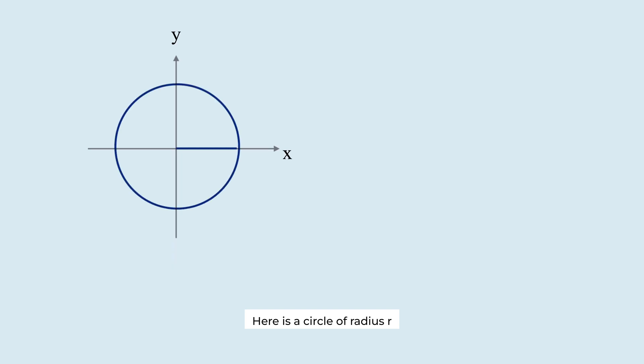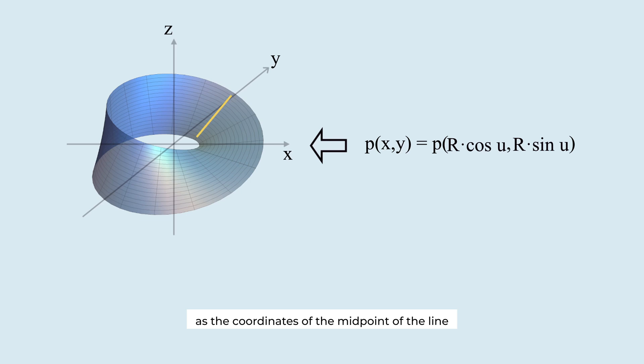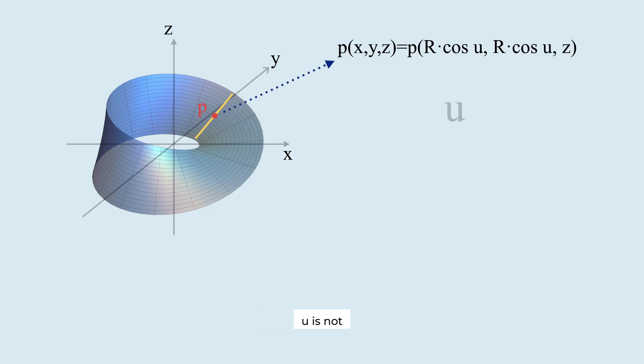Here is a circle of radius R with the angle u. The x-coordinate of the point is R cos u and the y-coordinate is R sin u. We use these values as the coordinates of the midpoint of the line on the Möbius strip. U is not the actual bending angle of the line. It represents the position of the line along the strip.